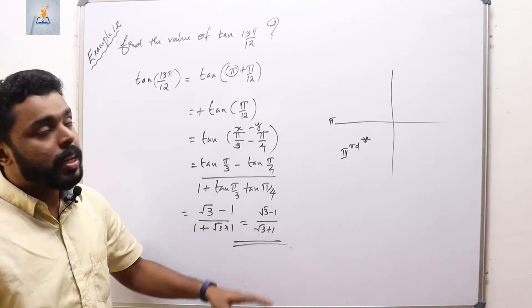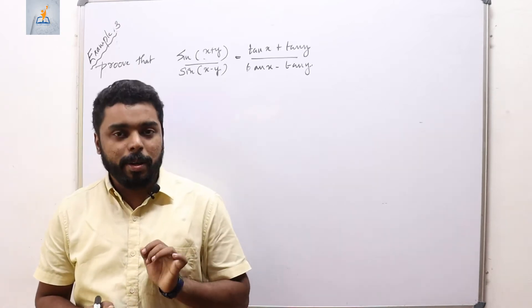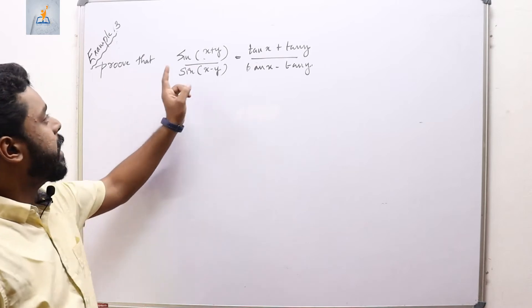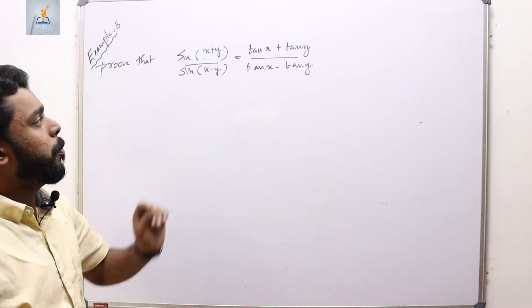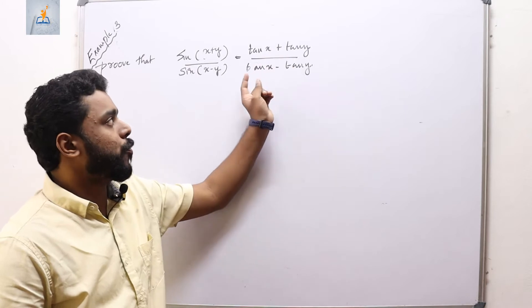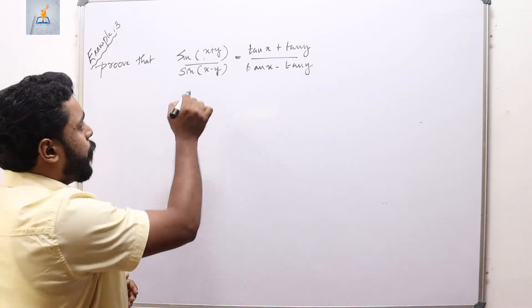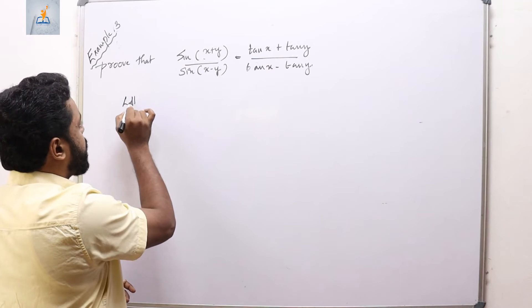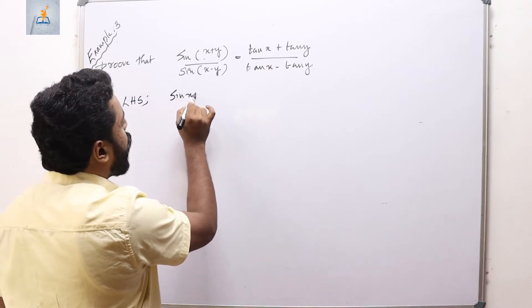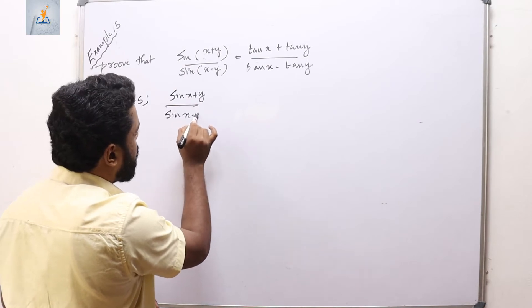Example 13: prove that sin(x+y)/sin(x−y) = (tan x + tan y)/(tan x − tan y). Consider the left-hand side. We substitute the formulas for sin(x+y) and sin(x−y) in the numerator and denominator respectively.